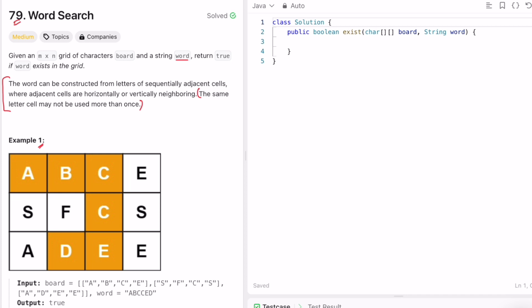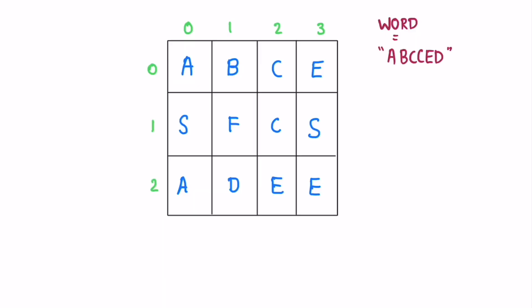Let's take the first example and see how we can solve this question. We are given the word ABCCED. It is obvious that you have to start with the first letter, so we first find the number of rows and the number of columns, and we start iterating through every character inside the board until we find the first character. In this example we are already at the first character A, so you begin your search here and check the four possible directions — top, down, left, and right.